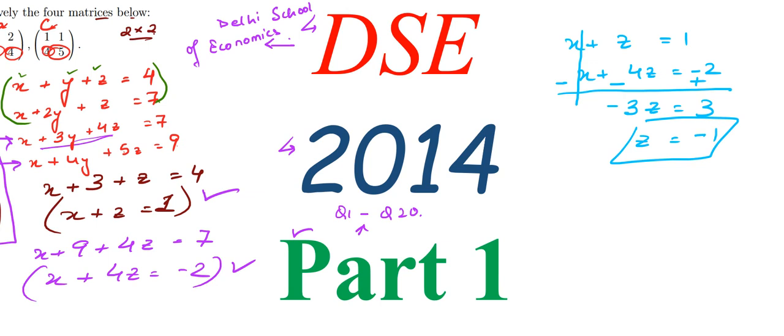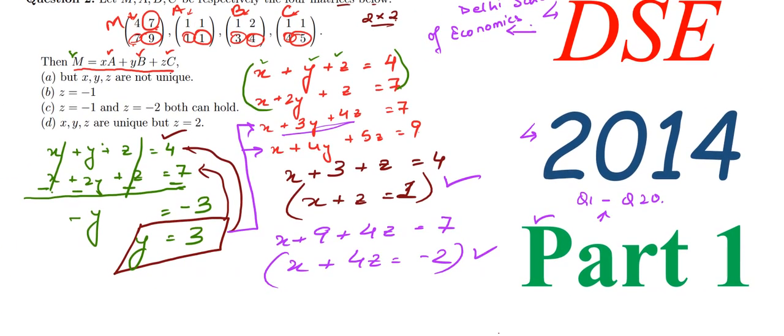First let us check the options. I think these two values will do our work. Remember we have got z equals minus 1. In options we have, but x, y, z are not unique. By seeing y and z's value, we can say that these two are unique. Hence option a is not correct. Option b says z equals minus 1. This option has been proved. Now let us check other options. Here we have z equals minus 1 and z equals minus 2. Both can't hold. We have considered three equations and found no other value of z. Hence this equation is also not valid. X, y, z are unique but x equals 2 is also not valid because our x value is minus 1. Hence our correct answer is option number b, that is z equals minus 1.